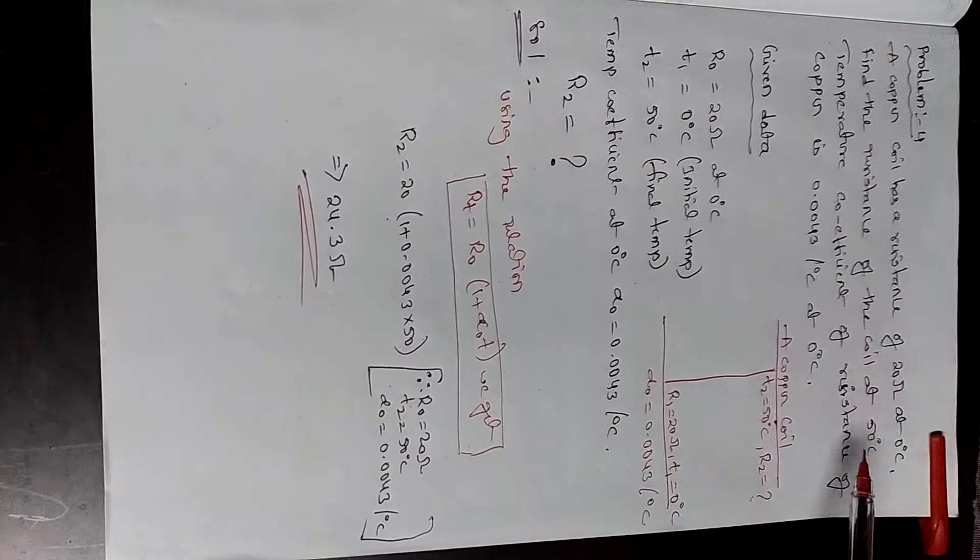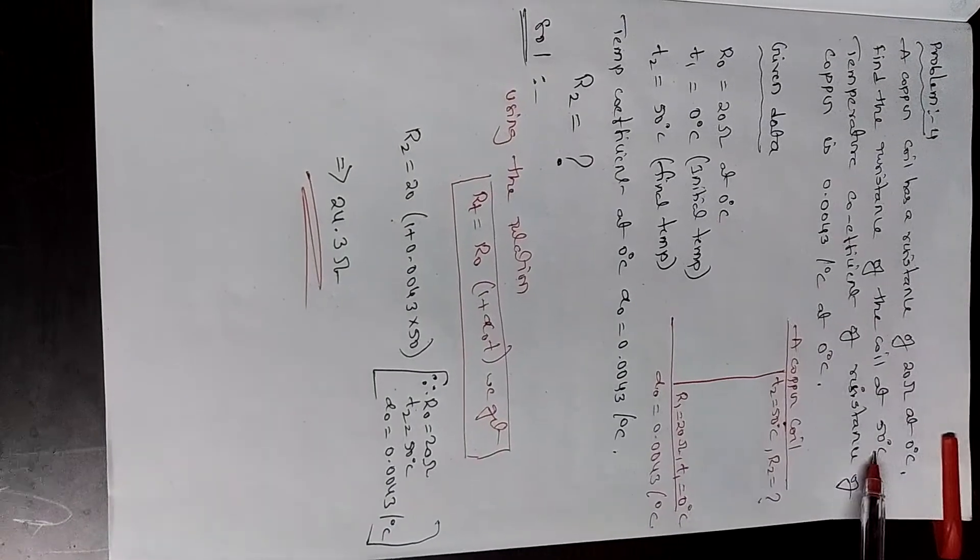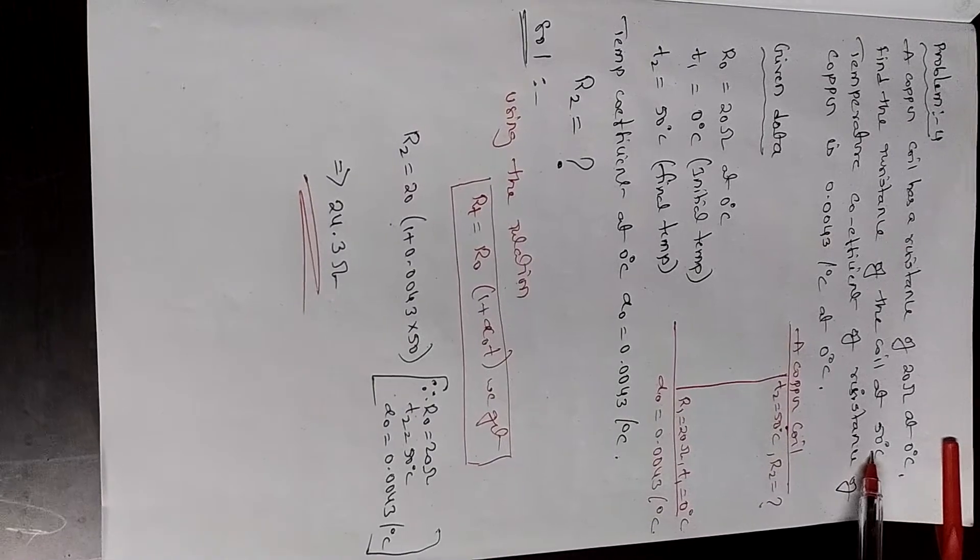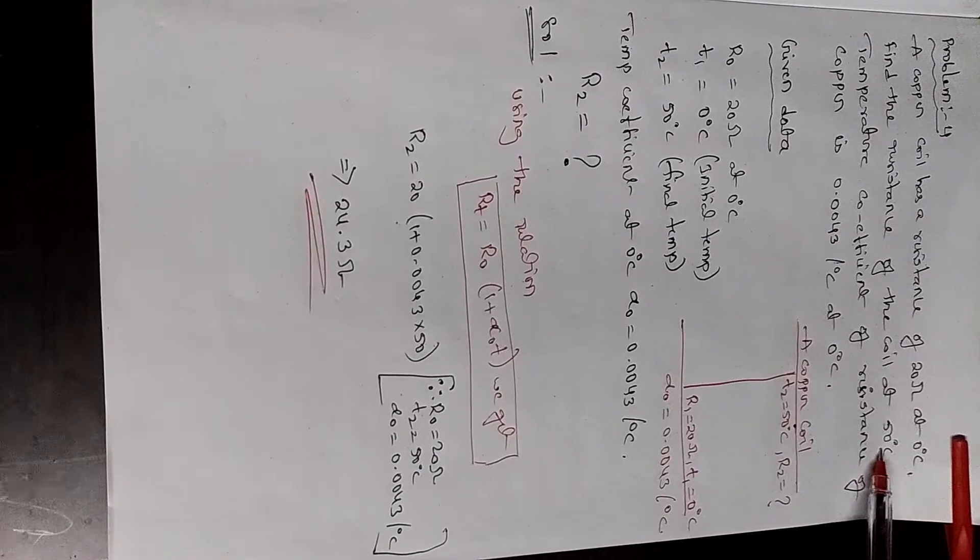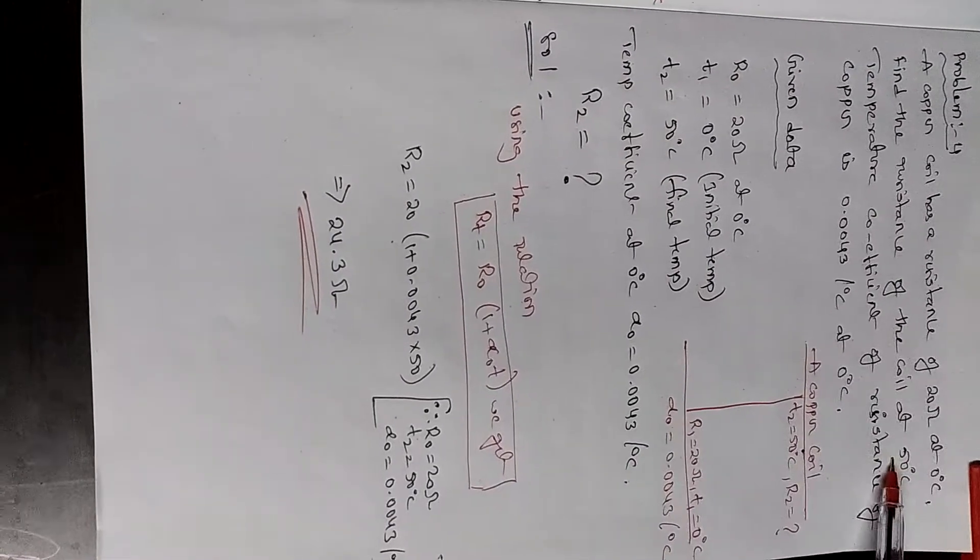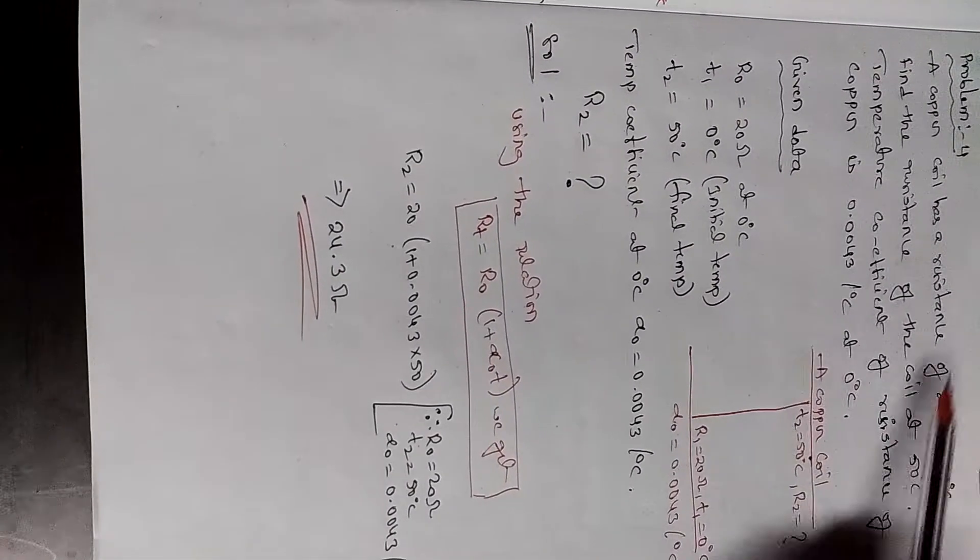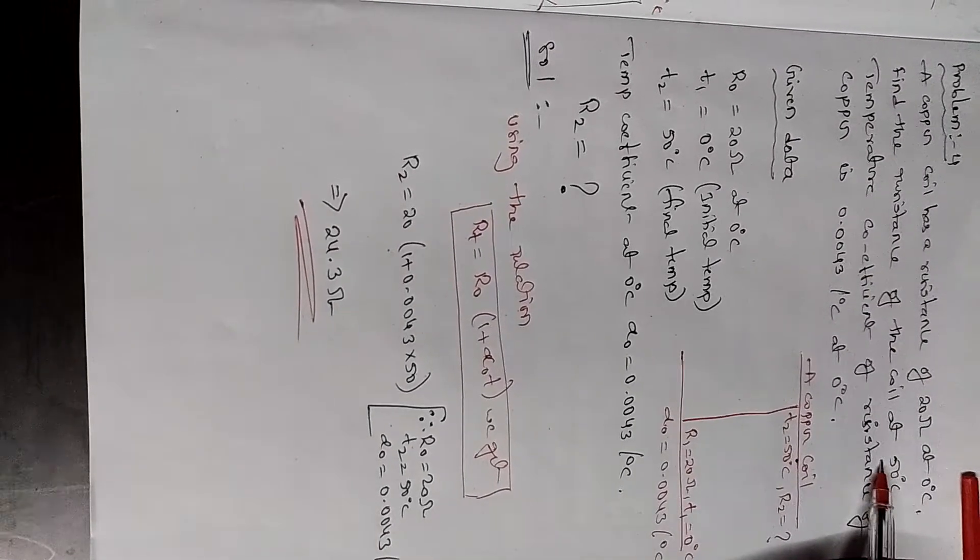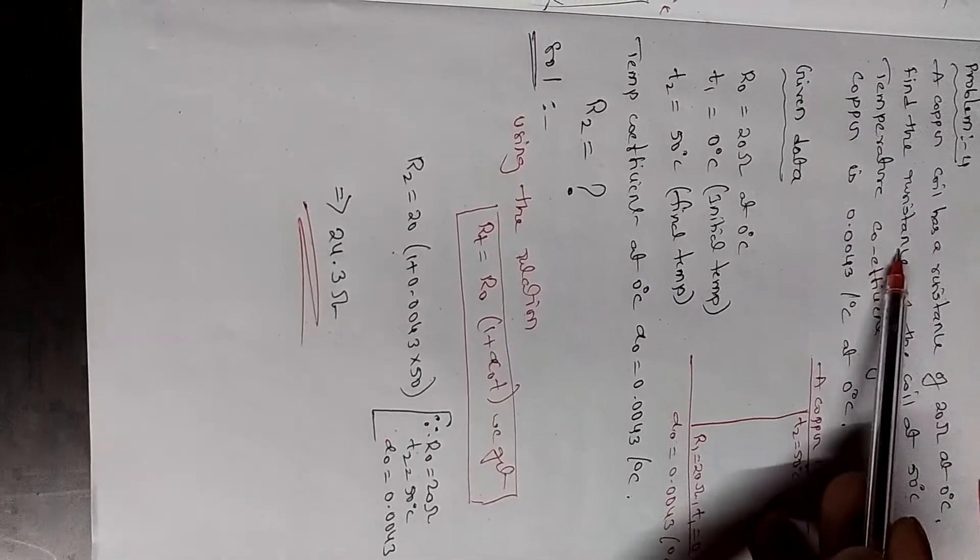Here, 50 degrees is T2, the final temperature, and we're asked to find R2. Find the resistance of coil at 50 degrees centigrade. What will be the resistance? It will be T2 degrees centigrade, and the resistance will be R2, which we have to find.